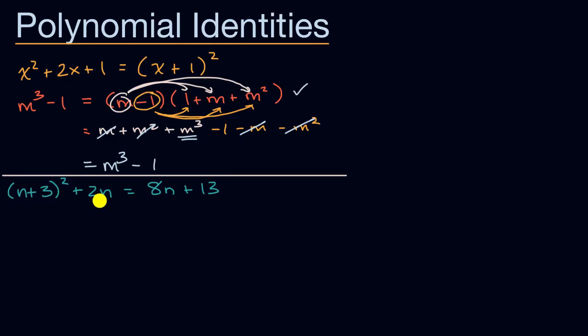Maybe the easiest thing to do first, and you could do this in multiple ways, is I have these n terms, 2n's here, 8n's over here. Well, what if I were to get these 2n's out of the left-hand side? So if I were to just subtract 2n from both sides of this equation,